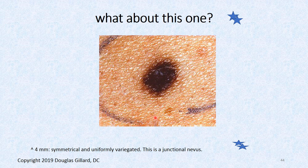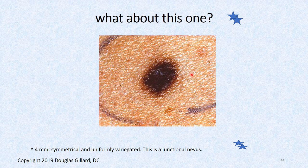Here's a perfect junctional nevi — really small, about three millimeters. It is variegated so it technically breaks the ABCs, but it's small. It's a little darker in the center, but the variegation is very symmetrical — kind of painted light brown on the outside and darker brown inside. That's a classic junctional nevus. This four-centimeter one is slightly variegated with light brown around the outside and dark brown in the middle — you could fold that one in half, it doesn't really have jagged borders. That turned out to be a junctional nevus.